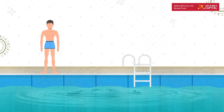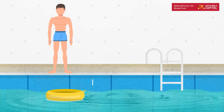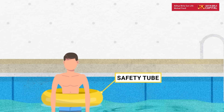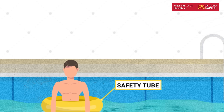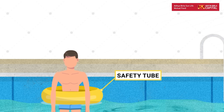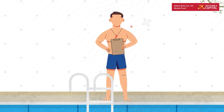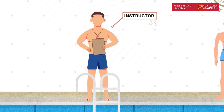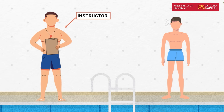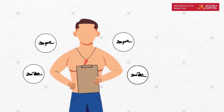Imagine a situation where you don't know how to swim and you want to learn. There are two ways you can do this. The first way is simple — just jump in a pool with a safety tube and learn on your own. However, you can take the second way of hiring a swimming instructor who will teach you step by step how to master swimming. Which one would you choose?